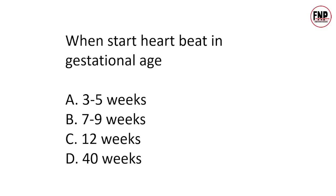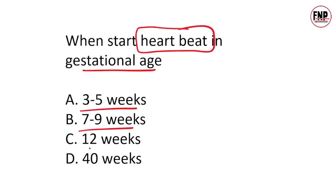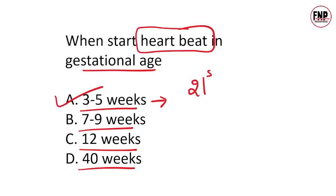Question 6: When does the heartbeat start during gestational age? Options: 3 to 5 weeks, 7 to 9 weeks, 12 weeks, or 40 weeks. Correct answer is Option 1 — 3 to 5 weeks। तीन से पांच weeks की gestational age पर heart अपना काम करना शुरू कर देता है। Normally, 21st day तक या 21st day पर heart beating शुरू हो जाती है — heart अपना function 21 दिन पर शुरू कर देता है।